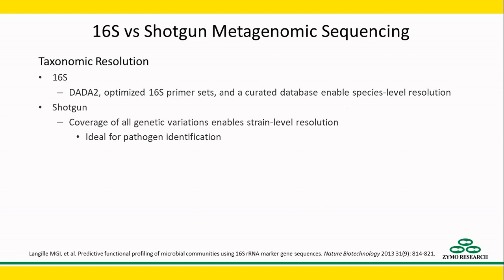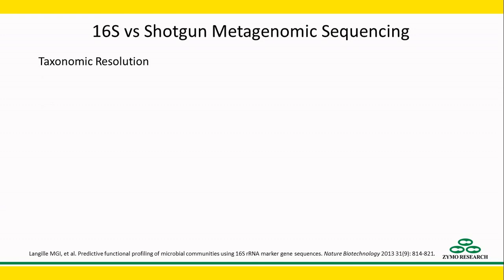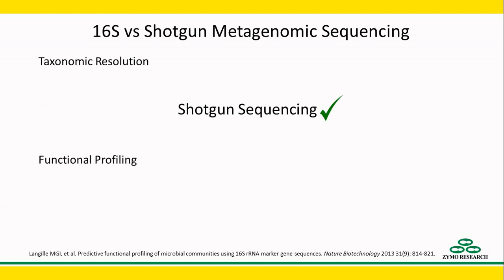So shotgun metagenomic sequencing achieves higher resolution compared to 16S sequencing. If metabolic function analysis is a goal, most researchers will quickly overlook 16S sequencing, but there are some tools that can infer metabolic function from taxonomy data.